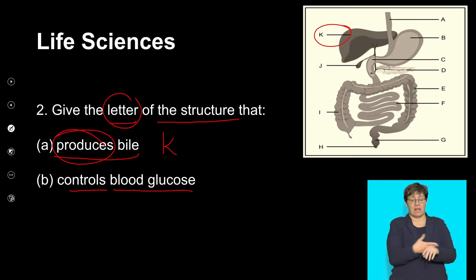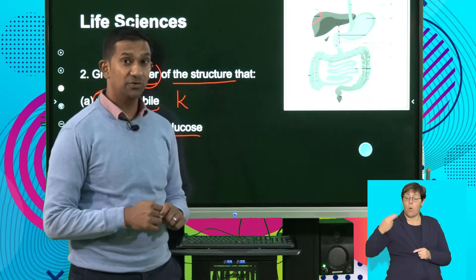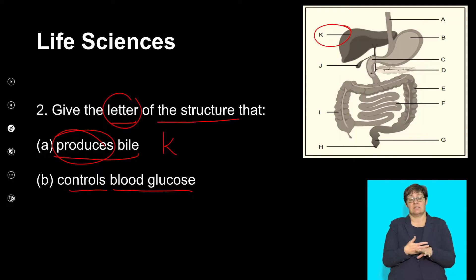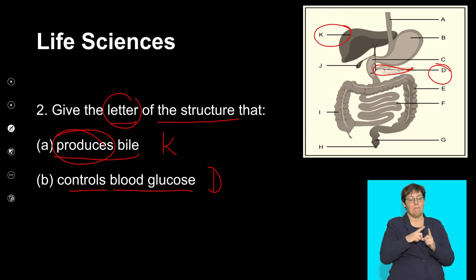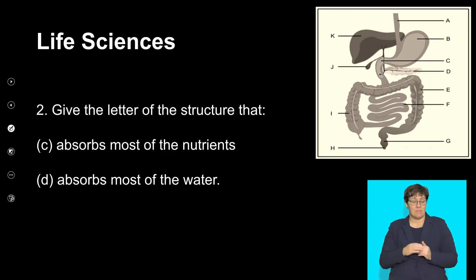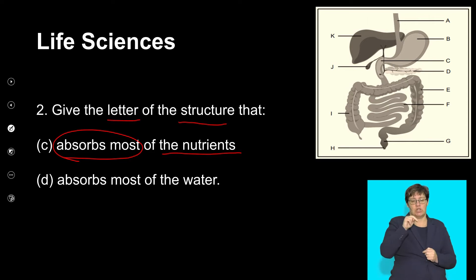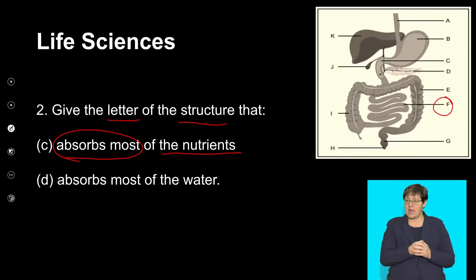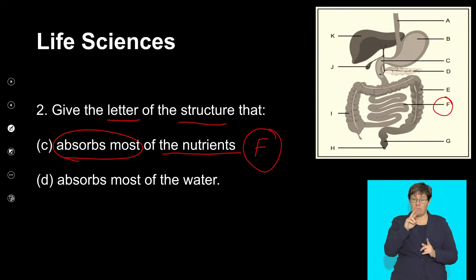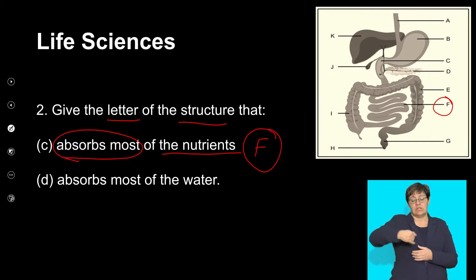The next question asks which structure controls blood glucose level. The pancreas produces hormones that play an important role in regulating blood glucose level. That's the pancreas, labeled D. The structure labeled D is the pancreas, controlling blood sugar levels. Give the letter of the structure that absorbs most nutrients — absorption of nutrients happens in the small intestine, so that's going to be letter F, the jejunum, where most nutrients that have been chemically digested are absorbed.